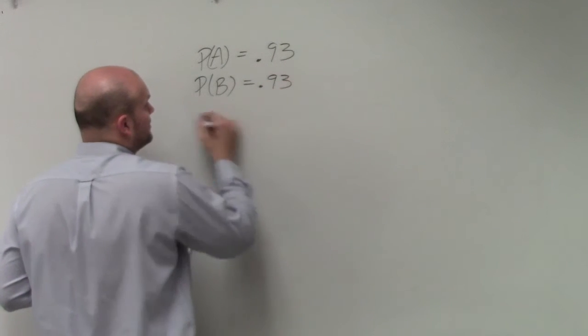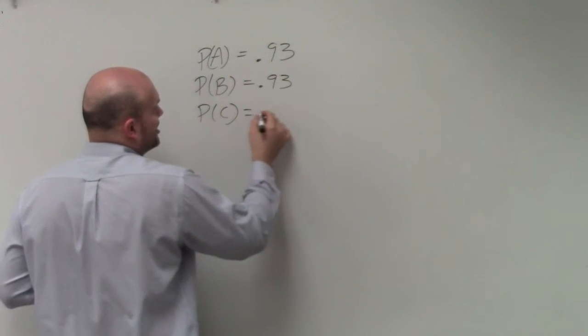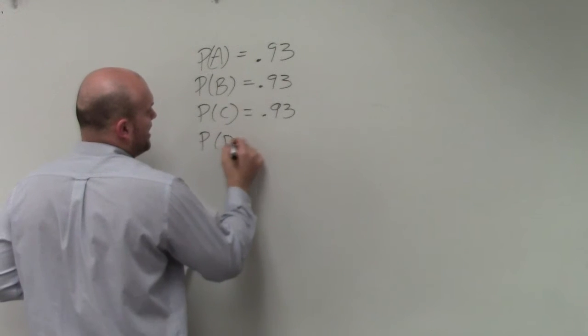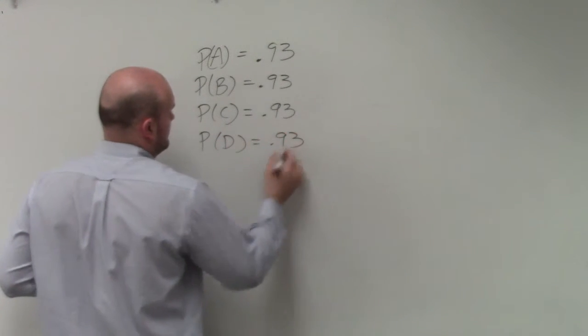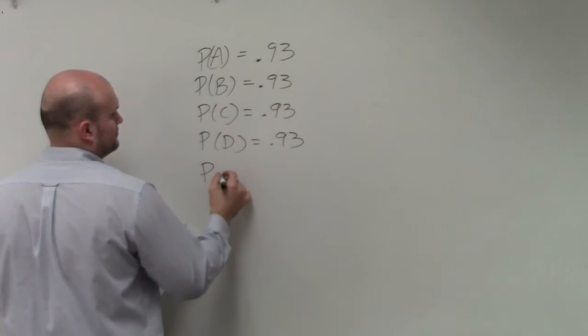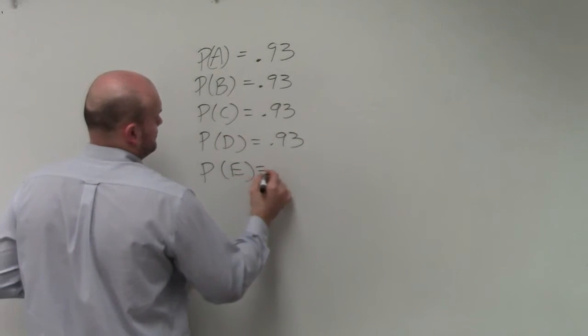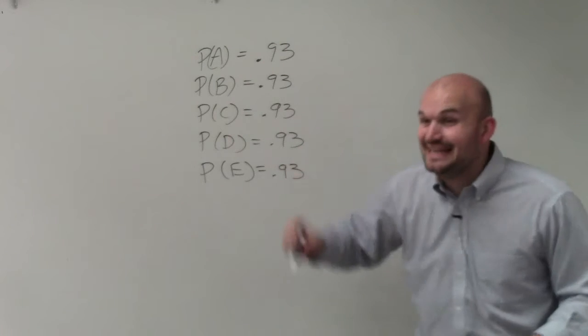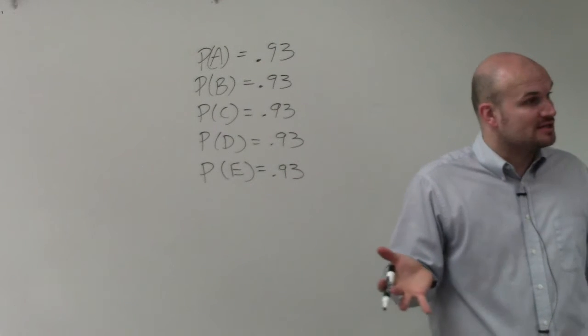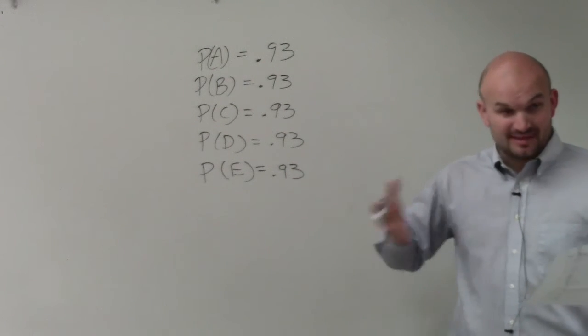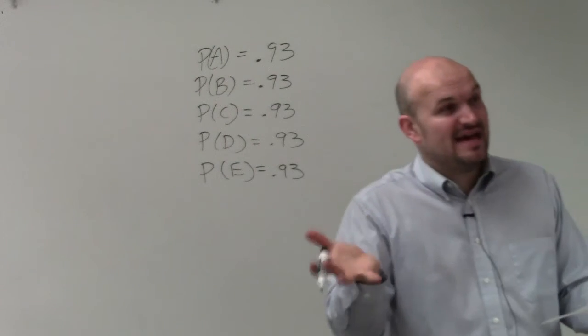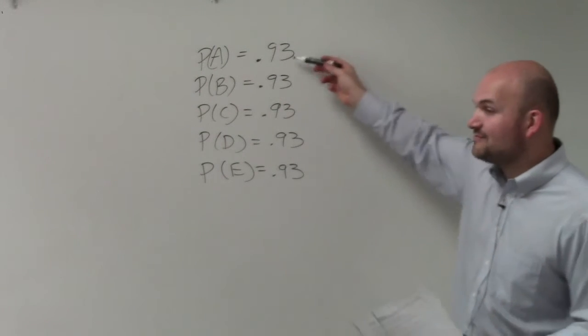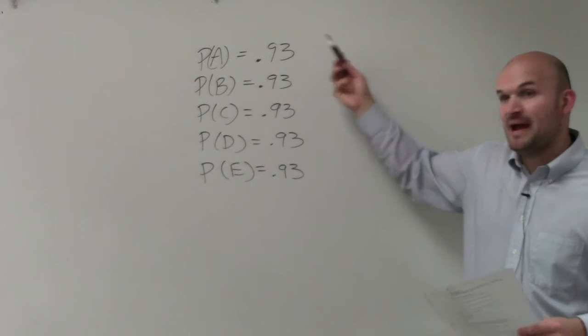Each event, each probability of each part has its own probability, where A, B, C, D, and E all represent different parts, right? Does that kind of make sense? They say what's the probability of the next five events, or the next five parts being examined pass inspection?